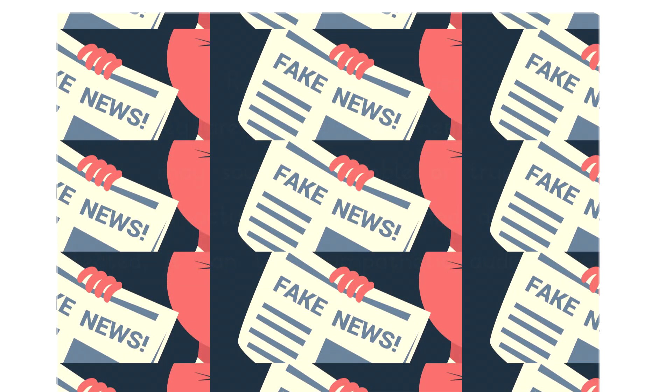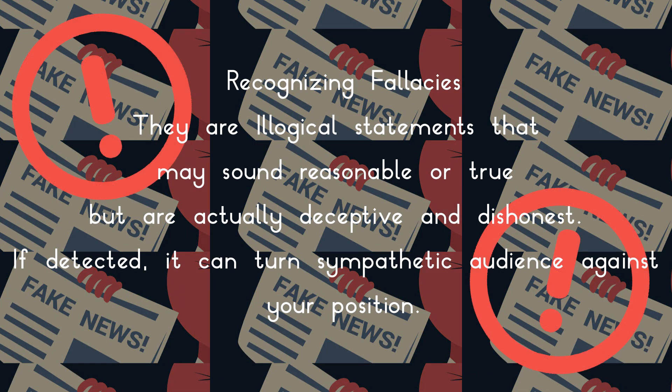Recognizing fallacies: they are illogical statements that may sound reasonable or true, but are actually deceptive and dishonest. If detected, they can turn a sympathetic audience against your position. The types of fallacies include begging the question, argument from analogy, argument ad hominem, jumping to a conclusion, false dilemma, equivocation, red herring, tu quoque (you also), appeal to doubtful authority, misleading statistics, post hoc reasoning, and non sequitur.